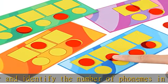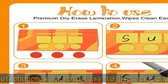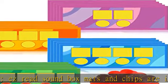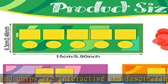Proper size: sound chip is 0.75 inches, small enough for your kids to hold, and the dry erase mat is 5.91 by 2.56 inches, which is lightweight and easy to store without taking up too much space.